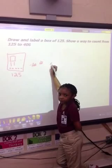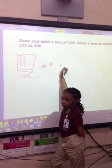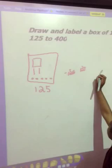Your student tonight will have to draw and label a box of a given number and show a way to count from that number to the next number. In this problem, they have to count from 125 to 400.